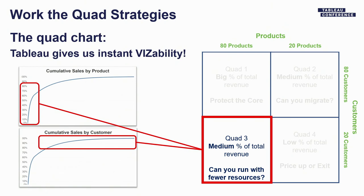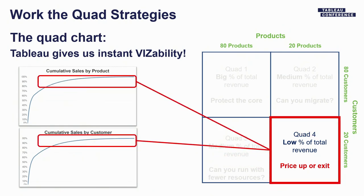Quad three is our best products going to the tail end of our customer base — a great piece of business, but we need to ask ourselves: are we spending too much time here? Should we be spending more time in quad one? Are we spending six out of eight hours chasing issues in this quad? We want to run it with the appropriate amount of resources. Quad four is the tail of both customer and product revenue — a pretty small percentage of revenue, but potentially a big number of products and customers. We want to make sure we're getting paid to do business there, and if we're losing money, we might need to get out.